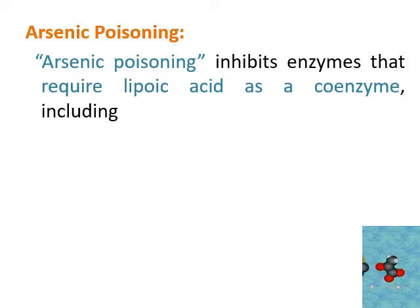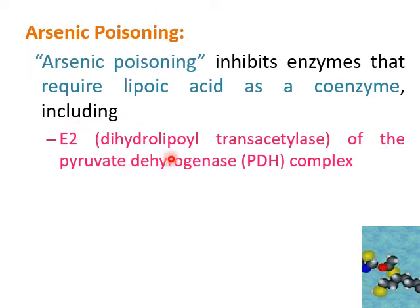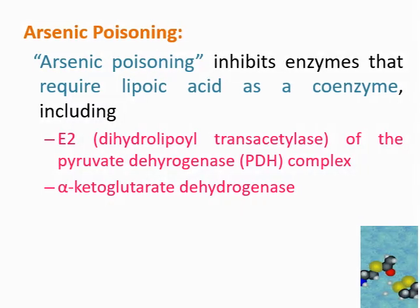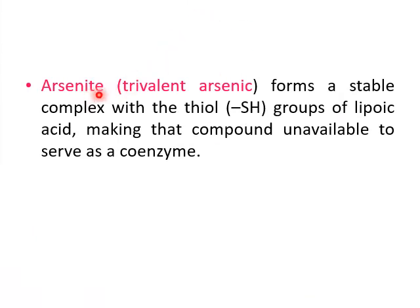Arsenic poisoning may result in inhibition of all enzymes of the Krebs cycle that require lipoic acid — for example, E2 (dihydrolipoyl transacetylase) of the PDH complex and alpha-ketoglutarate dehydrogenase. Arsenide, the trivalent form of arsenic, can form bonds with the sulfhydryl (thiol) groups of lipoic acid, rendering lipoic acid unavailable to act as a coenzyme for the component enzymes of the Krebs cycle.